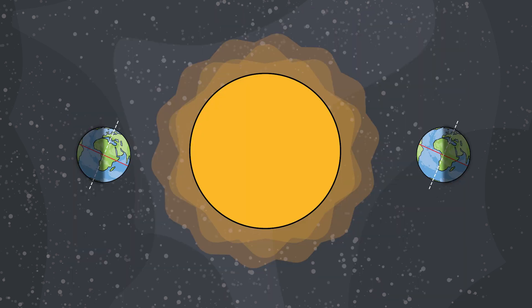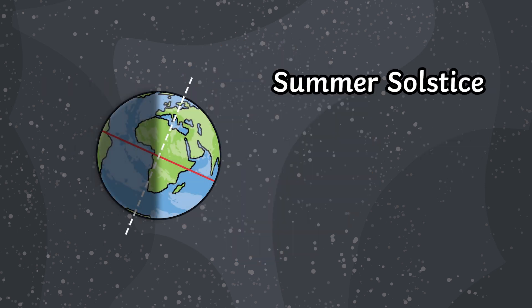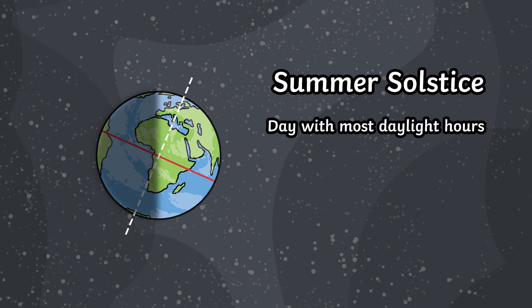At two points in the year we get a solstice: a summer solstice and a winter solstice. The summer solstice is the day where we get the most daylight hours in a day, also known as the longest day.